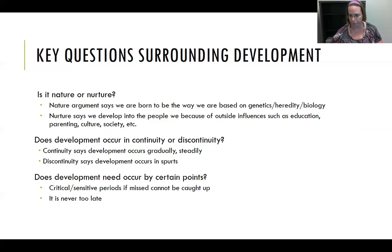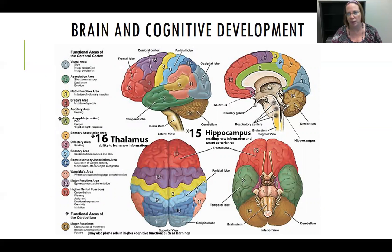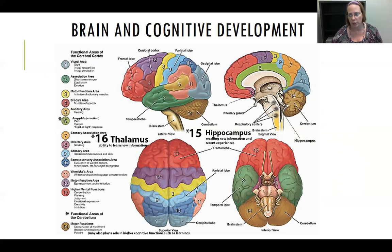No conversation about cognitive development would be complete without a cursory look at the brain itself. This diagram shows the different areas of the brain and which ones are associated with different areas of cognition. The frontal lobe, for instance, is associated with executive or higher mental functions such as concentration, judgment, and creativity. My only concern here is that we understand that different areas of the brain control different functions and cognition — you do not need to memorize this; it is here for reference only.